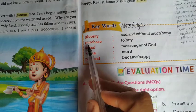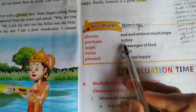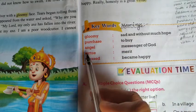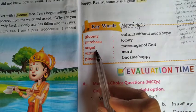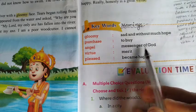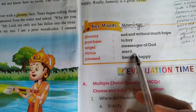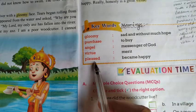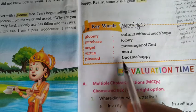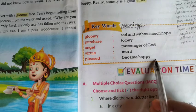Okay, next one. Purchase — to buy. Angel — messenger of God. Virtue — merit. Pleased — became happy.